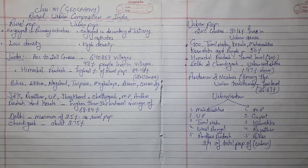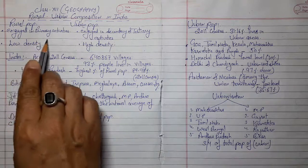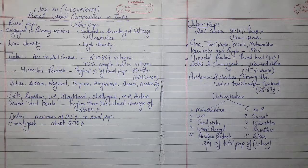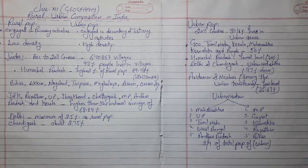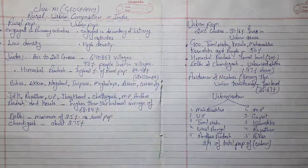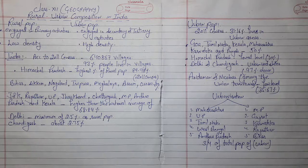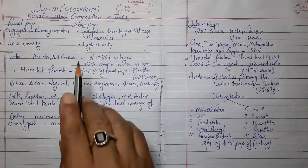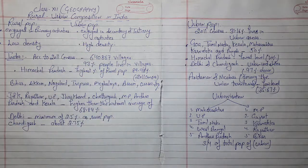People living in the villages are mainly engaged in primary activities such as agriculture, fishing, hunting, gathering, lumbering, and mining. On the other hand, the people of the towns and cities are engaged in secondary and tertiary activities, namely industries, trade, transport, and services. They are called urban people.